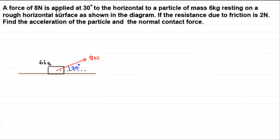We've got a force of 8 newtons, applied at 30 degrees to the horizontal to a particle of mass 6 kilograms, resting on a rough horizontal surface as shown in the diagram. If the resistance due to friction is 2 newtons, find the acceleration of the particle and the normal contact force.